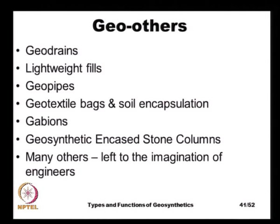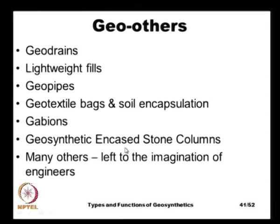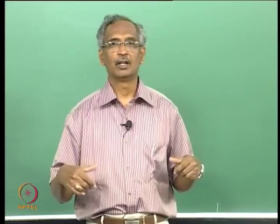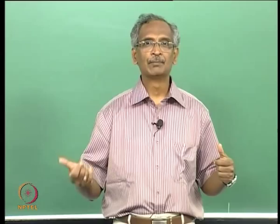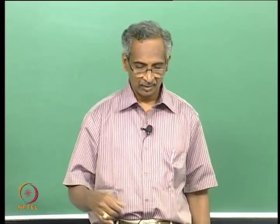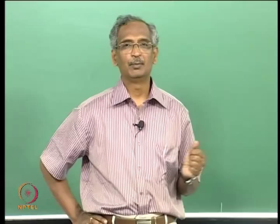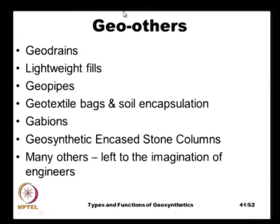Geopipes are very similar to geodrains. Geotextile bags have been shown earlier for construction of coastal erosion protection structures. Geobags can also be used for soil encapsulation — for example, in very soft soil, large geobags filled with aggregate or soil can encapsulate the soil and act as a rigid mat. Gabions can also be categorized as geo-others and can be made of steel wire meshes or rope nets.